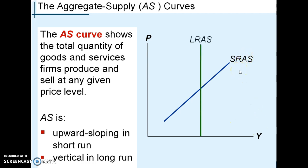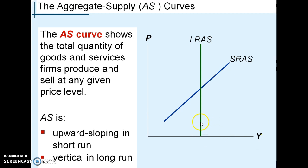We're going to mainly focus on the long-run model right now, which shows a vertical aggregate supply curve. If you have a vertical aggregate supply curve, this tells you price levels rise or fall with no change in your real GDP. That's consistent with the classical dichotomy and money neutrality — prices rise or fall with no impact on your real production.